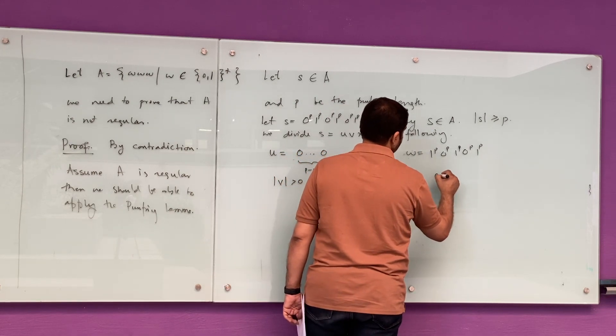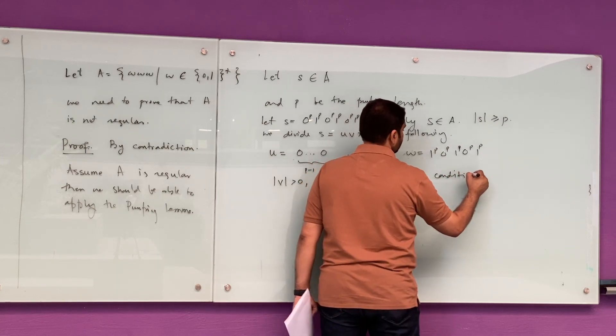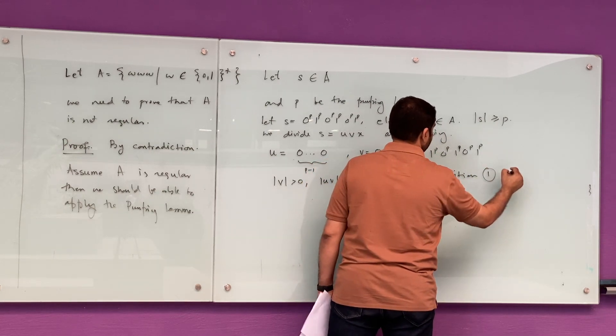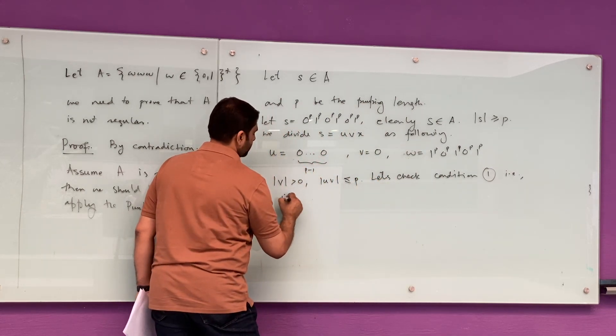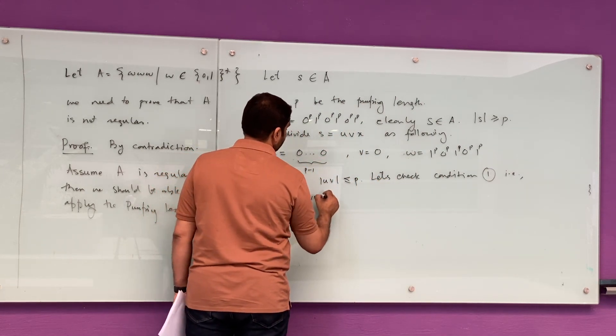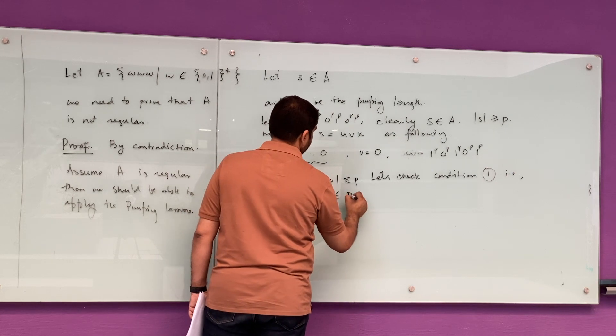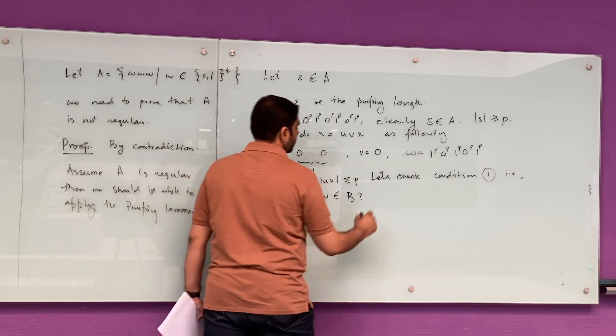We can clearly see that conditions two and three are satisfied. That is, V is non-zero, and UV has length at most P, which is the pumping length.